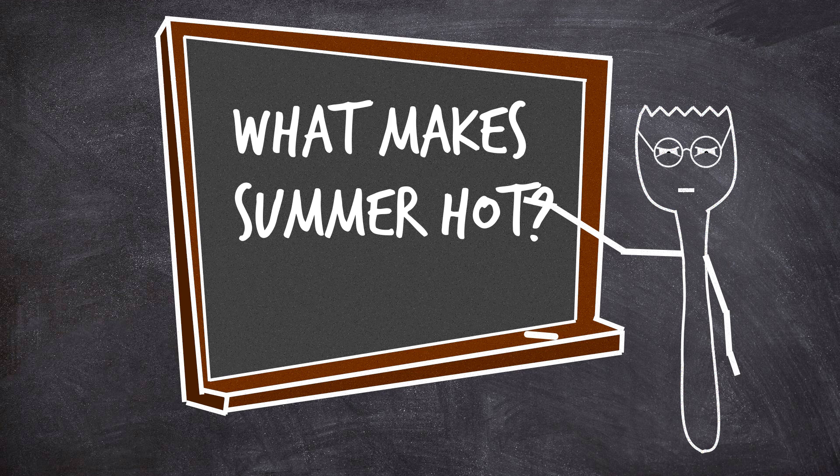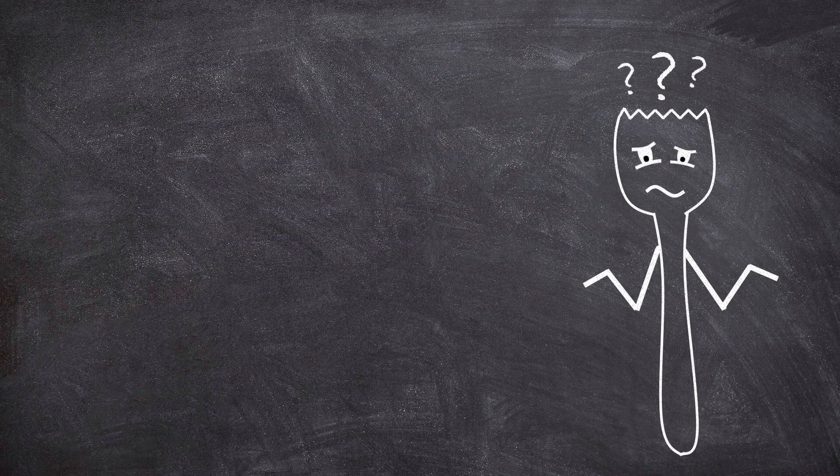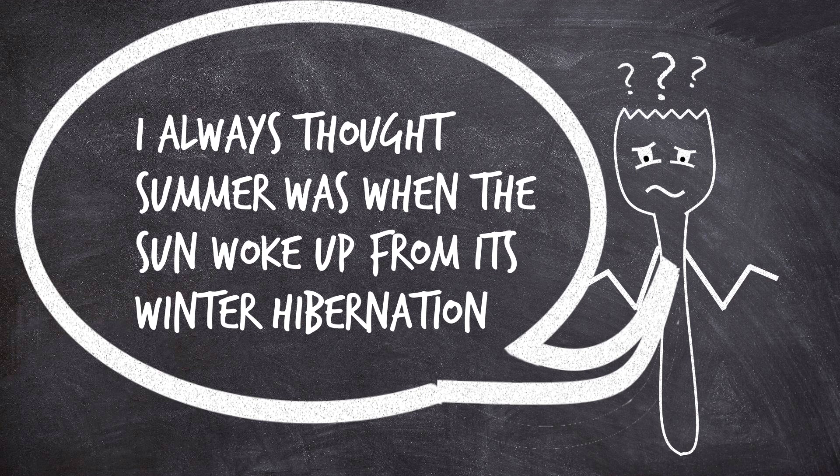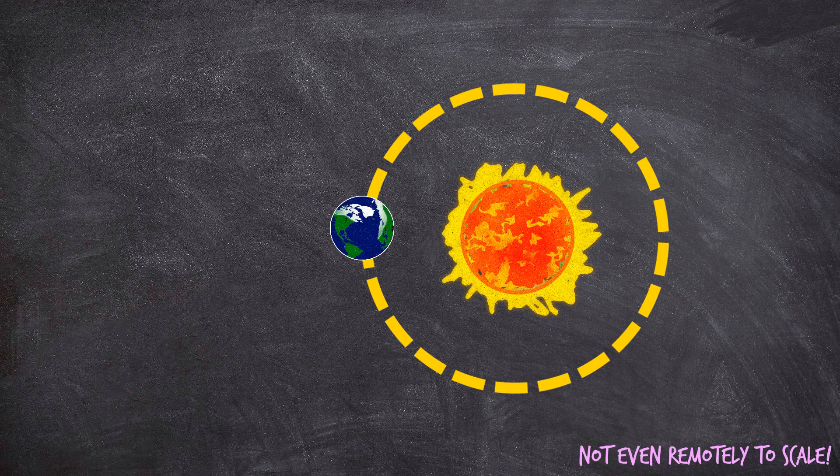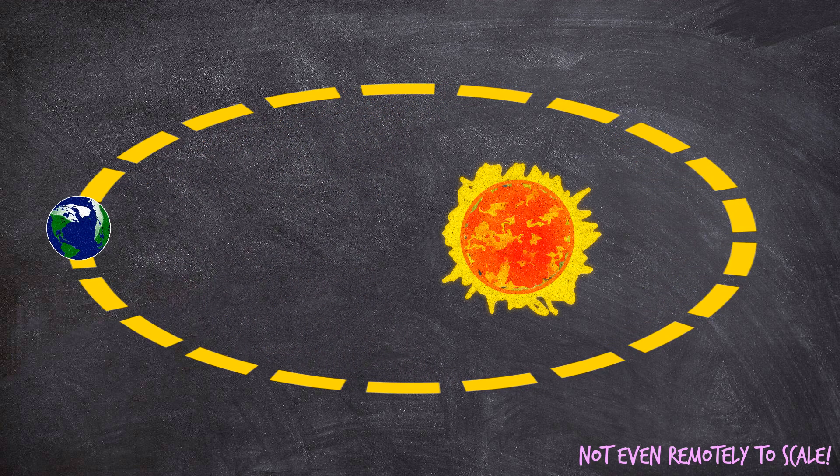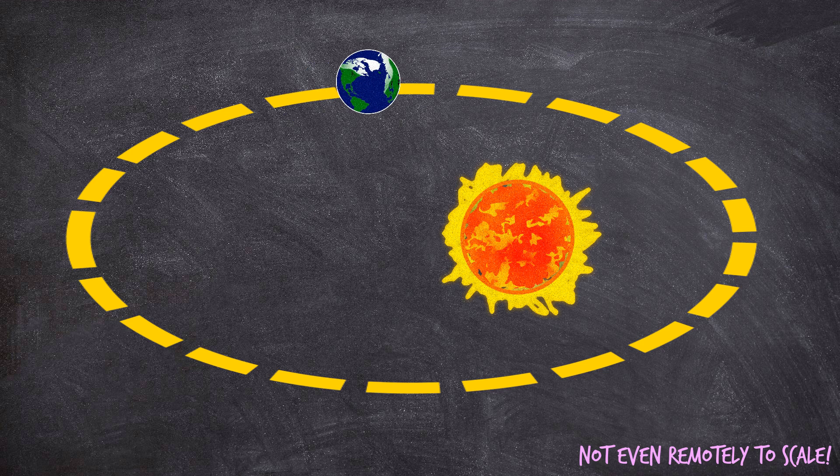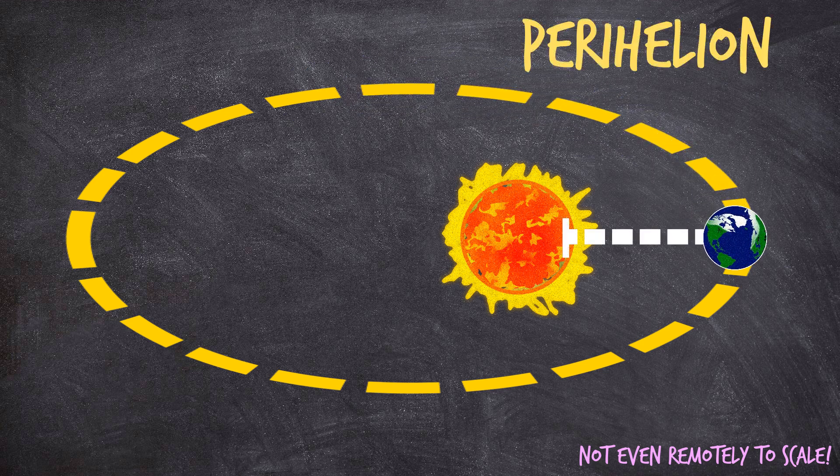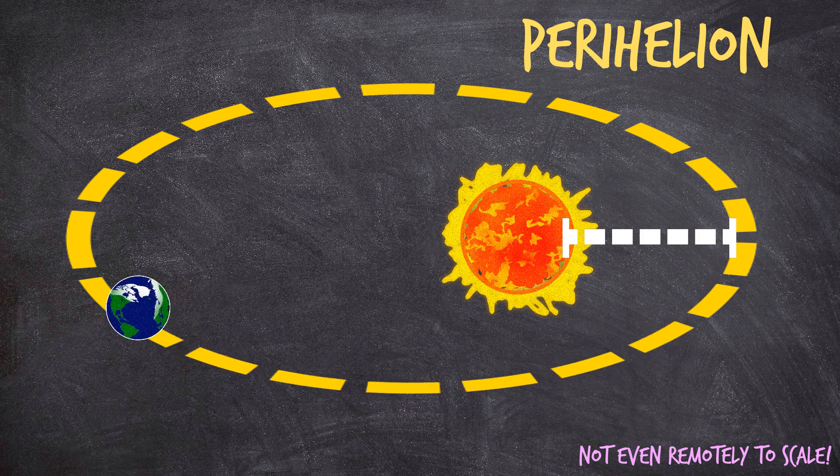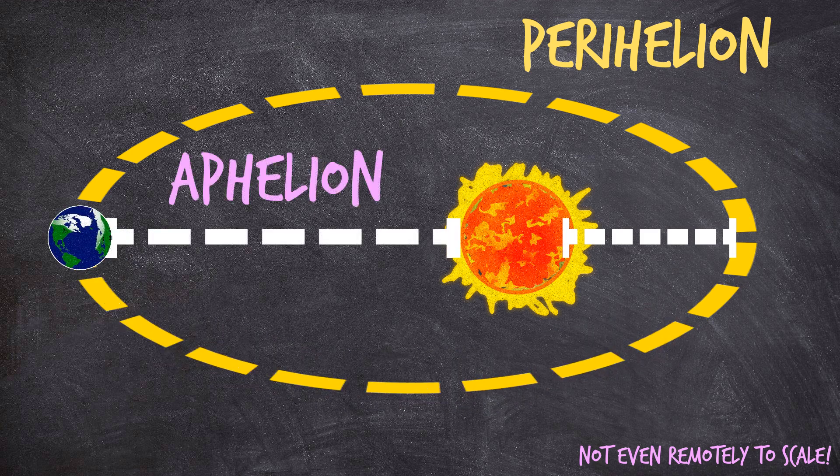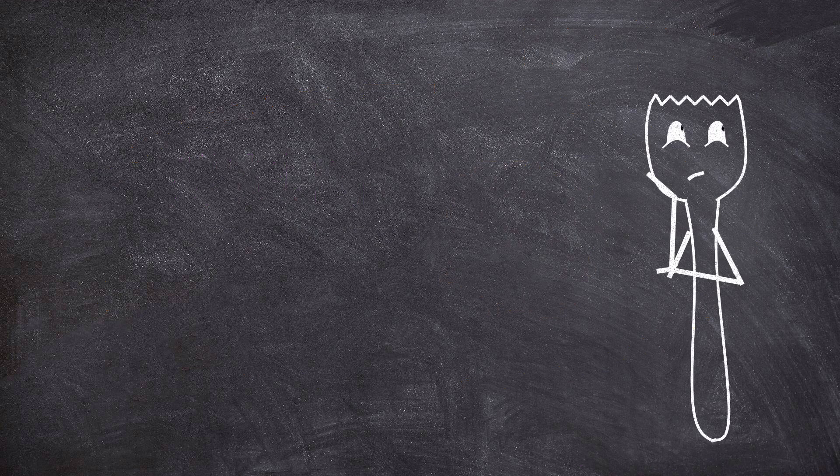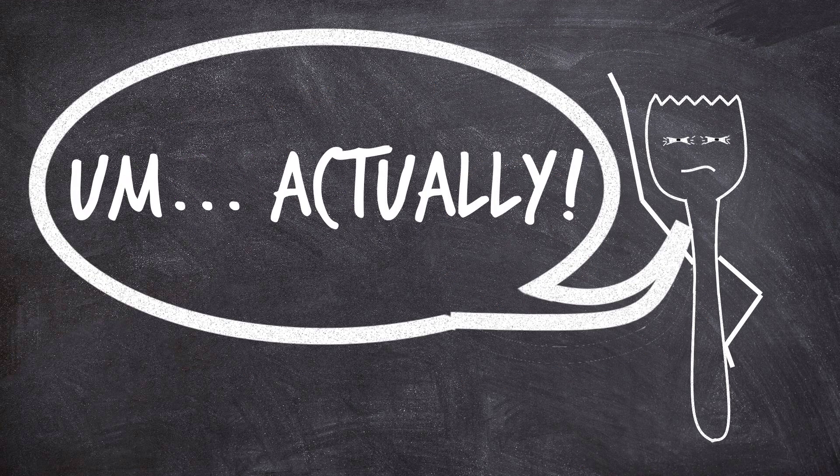Now there are actually a number of pretty obviously wrong explanations for what causes the seasons on the internet. The most popular is probably the belief that since the Earth's orbit around the sun is not a perfect circle, it's actually kind of like a squished ellipse. Well then summer occurs when the Earth passes closest to the sun, called perihelion, and winter is when it's the furthest, called aphelion. So the seasons are all about literally being closer or further from the sun, but of course if you think about that for like five seconds you can pretty much immediately realize it's not true.